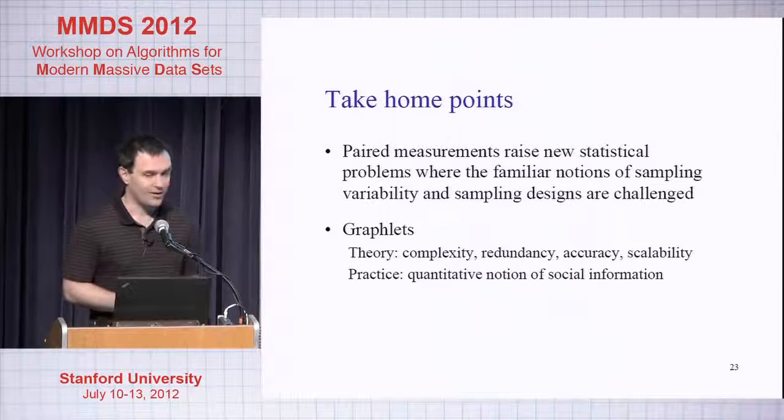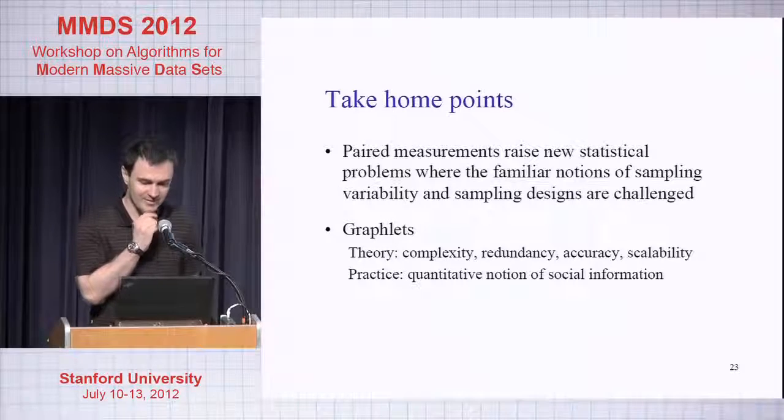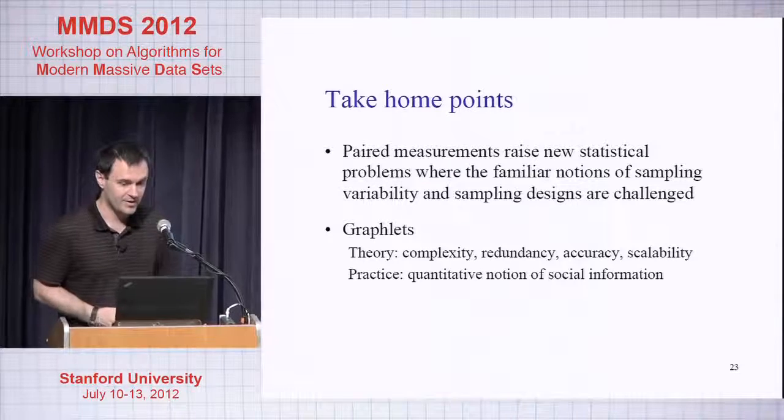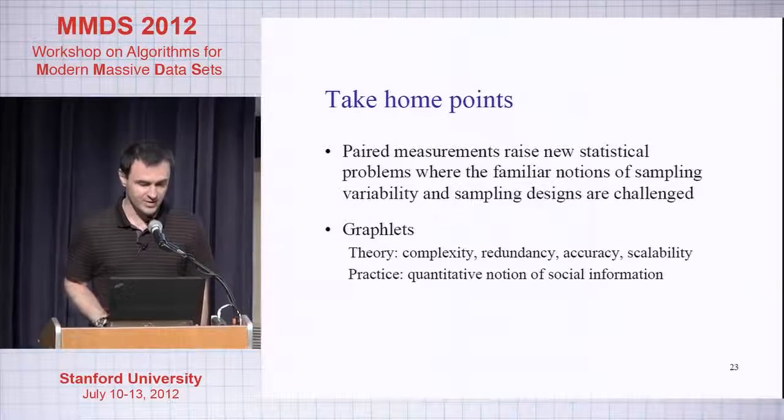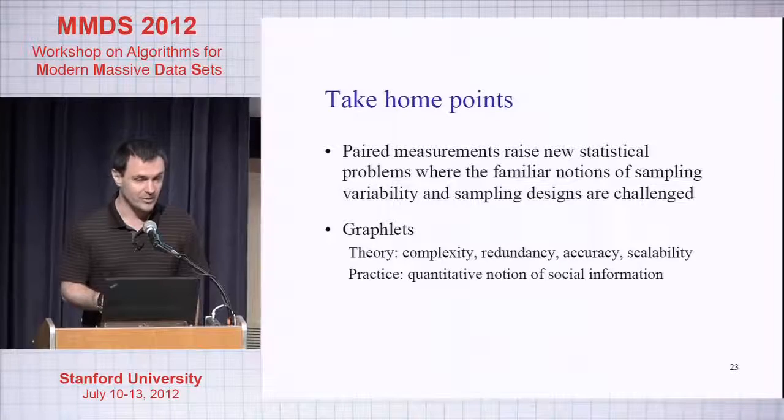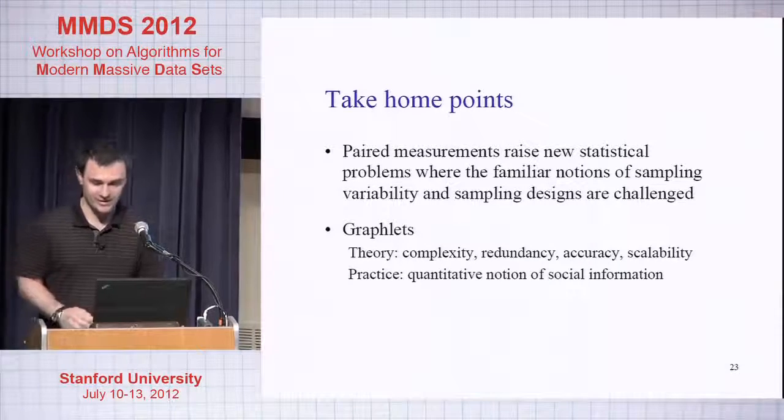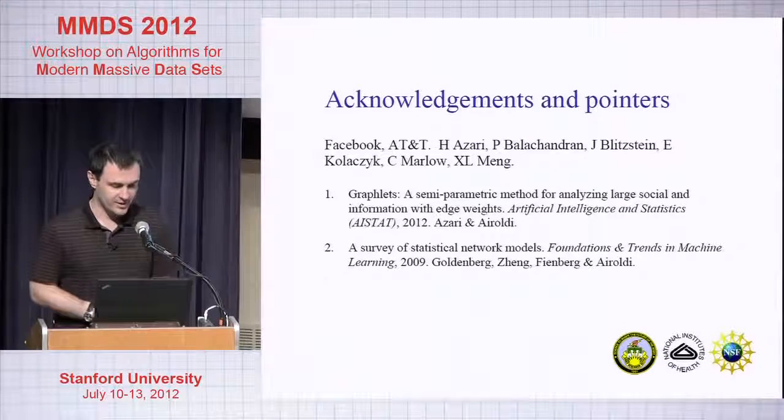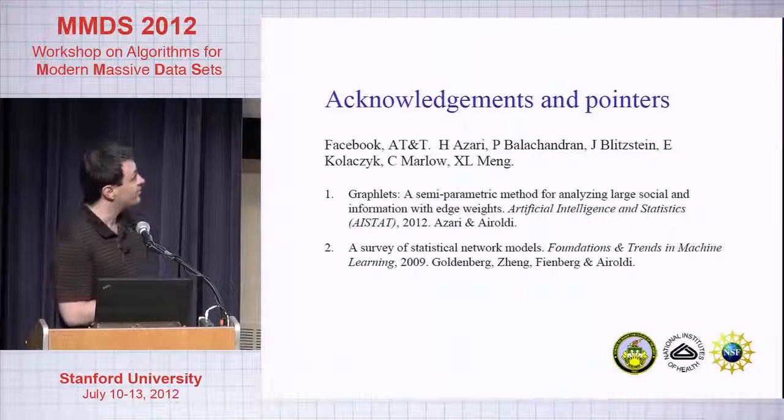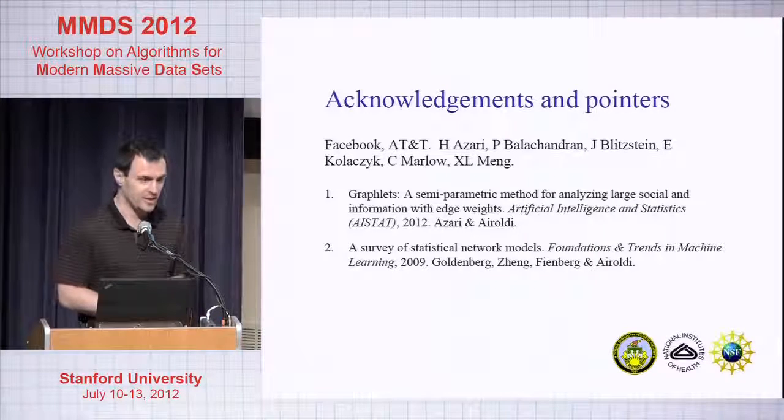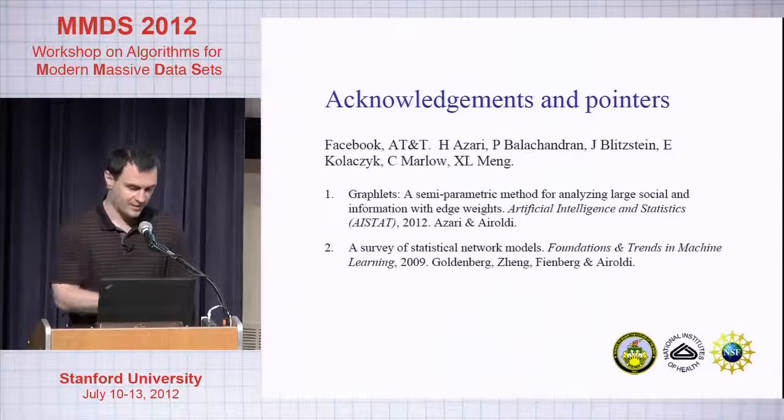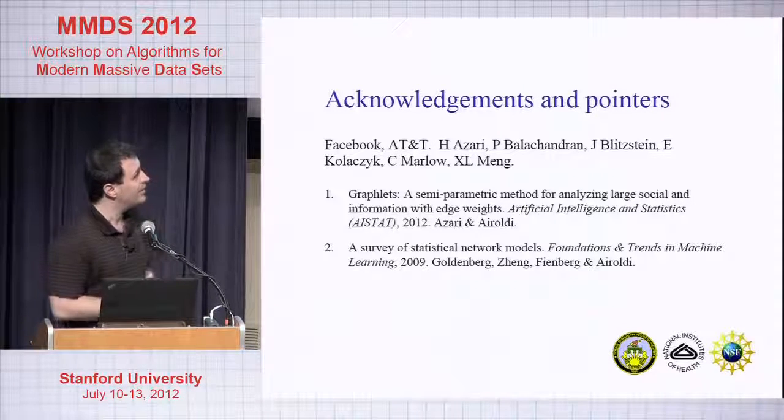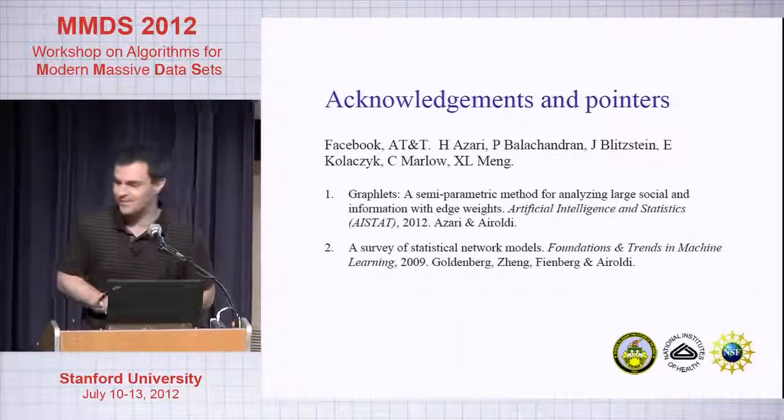Take-home points: more in general, paired measurements or analysis of networks raise a lot of interesting statistical problems. I haven't told you about this in this talk, but in general familiar notions of sampling variability and sampling design are challenged. Graphlet has some theoretical guarantees and is useful in practice. There is a paper that you can read on AISTATS. There's a survey if you're more interested in reading more about statistical models of networks. This is work that was in collaboration with Facebook and AT&T, and it's been done mostly by my student Hossein Azari. Thank you.